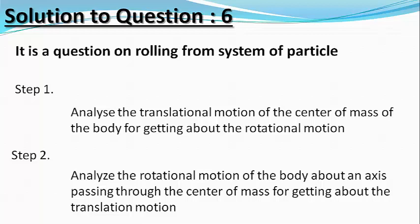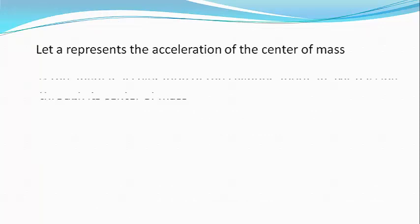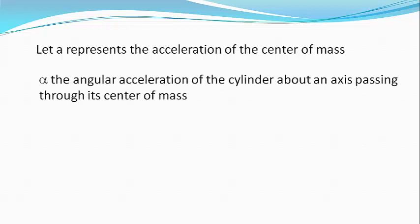let a be the translational acceleration of the center of mass of the cylinder and alpha be the angular acceleration of the cylinder about its axis of rotation. Moreover, since the cylinder is rolling,